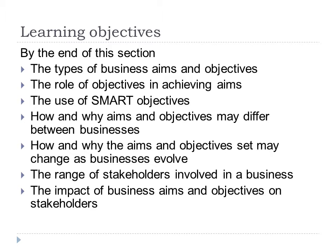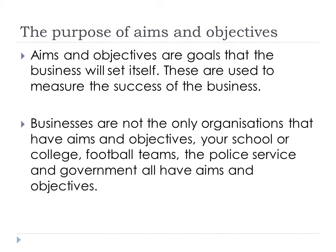Looking at the learning objectives — there are quite a few — but basically we're looking at the aims and objectives of businesses: how they set them, why they're important, how they change, the different stakeholders in the business, and how aims and objectives impact those stakeholders. To begin with, let's establish what is meant by aims and objectives. Aims are essentially a goal for a business to aim for, and objectives are how they go about achieving those aims. All businesses have aims and objectives — the same applies to football teams, schools, and so on.